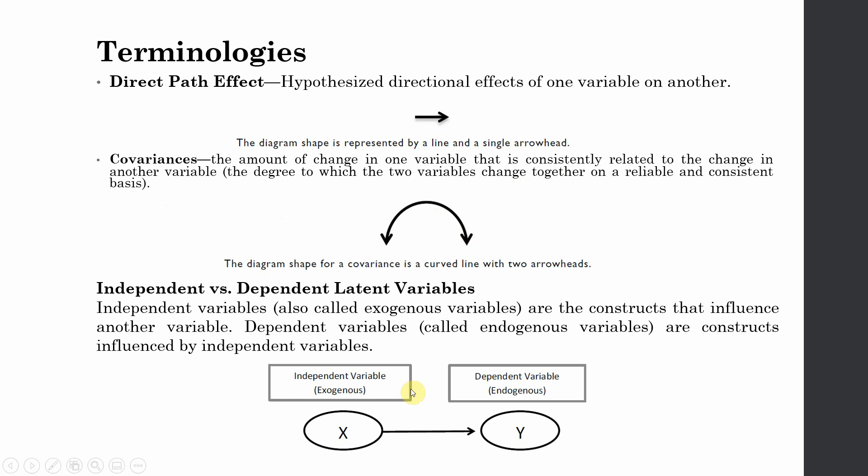When we want to link an independent exogenous variable with the dependent endogenous variable, this is how we do it. This is your independent variable, this is your dependent variable, where X is influencing Y, and we see a single-headed arrow.